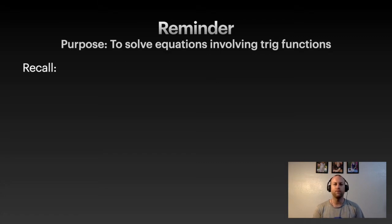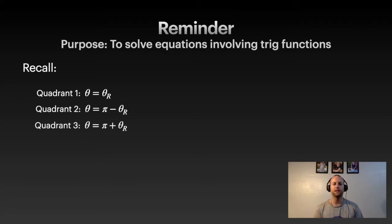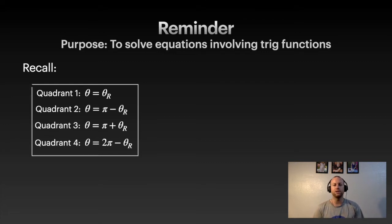As a reminder of what we've seen before: if you're given the reference angle and want to figure out something in a specific quadrant, we have set equations. In quadrant 1, theta is just the reference angle. In quadrant 2, it's pi minus the reference angle. In quadrant 3, it's pi plus the reference angle. And quadrant 4 is 2pi minus the reference angle. These are our equations when working in radians.